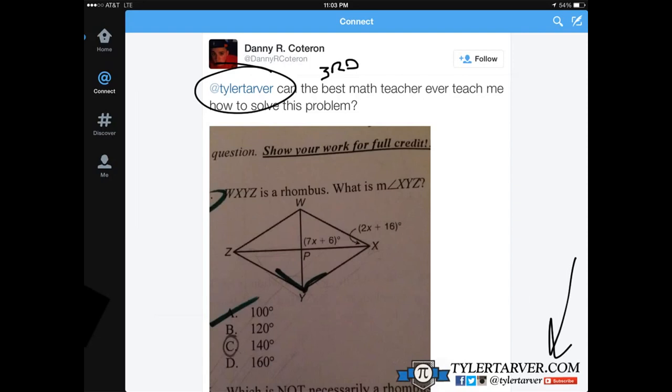WXYZ is a rhombus. What is the measure of angle XYZ? Okay. Well, a rhombus, first off, the big thing about it is that all four sides are equal.